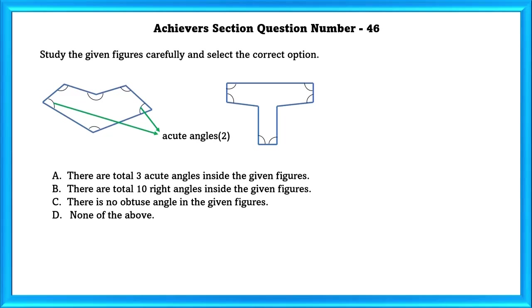B: There are total 10 right angles inside the given figure. As we can see, there are only 4 right angles in this figure. So, this statement is also false.